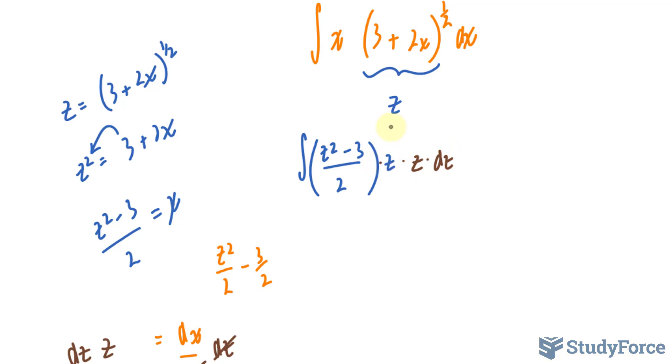Next, what I'll do is clean up this expression by multiplying this expression with z to the power of 2. And if I do that, I will end up with the integral of (z to the power of 4 minus 3z to the power of 2) over 2, which I'll distribute to each of these terms, dz.